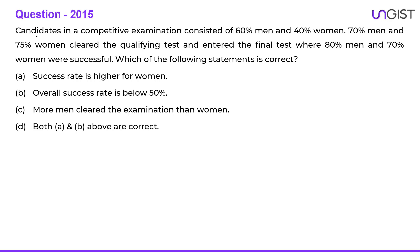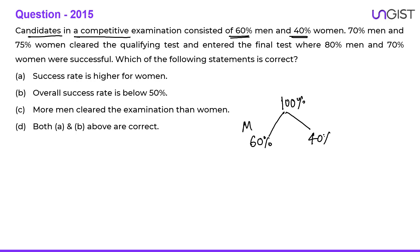Next question: candidates in a competitive examination consisted of 60 percent men and 40 percent women. Out of that 100 percent, 60 percent are men and 40 percent are women. 70 percent of men cleared the qualifying test — 70 percent of 60 is 42 percent. So 42 percent of men cleared the qualifying test. And 75 percent of females — 75 percent of 40 is 30. So 30 percent of the total females qualified the test.